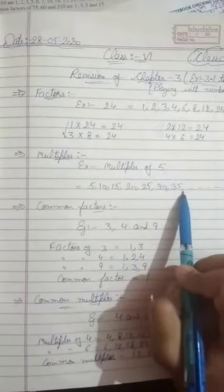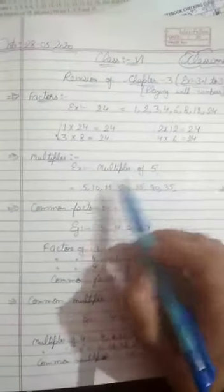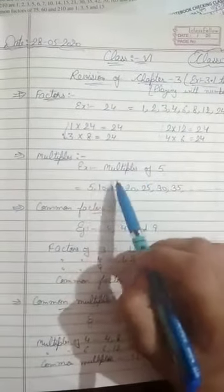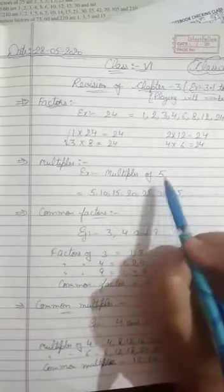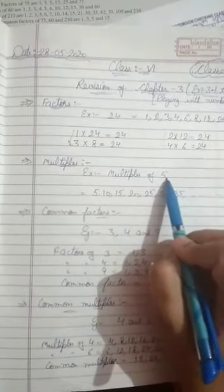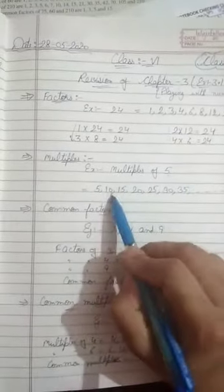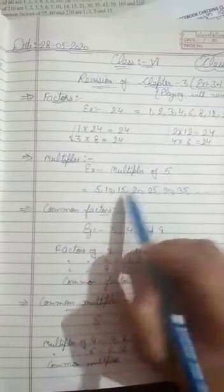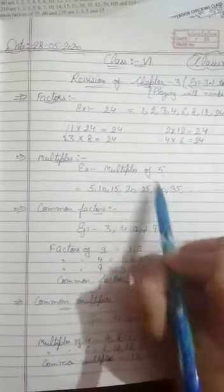Or in other words, we can say that the multiple of the given number is that number which is exactly divisible by the given number. Like 5 is divisible by 5? Yes. 10 divisible by 5? Yes. 15 divisible by 5? Yes, and so on. So these are the multiples of 5.